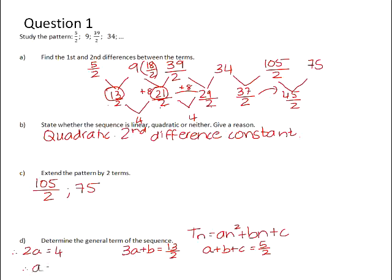So that gives us a to be equal to 2. If we then substitute 2 in place of a and solve for b, you get b to be a half. And therefore, 2 plus a half plus c is 5 over 2. And that gives you c to be 0. So therefore, your general term is 2n squared plus a half n.